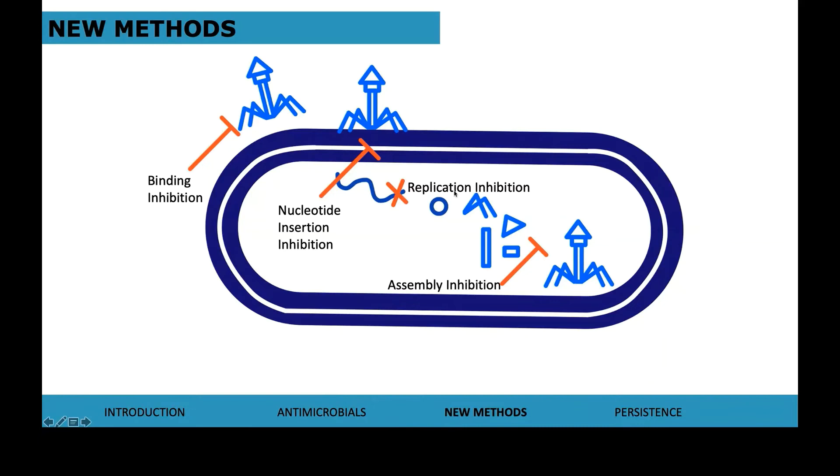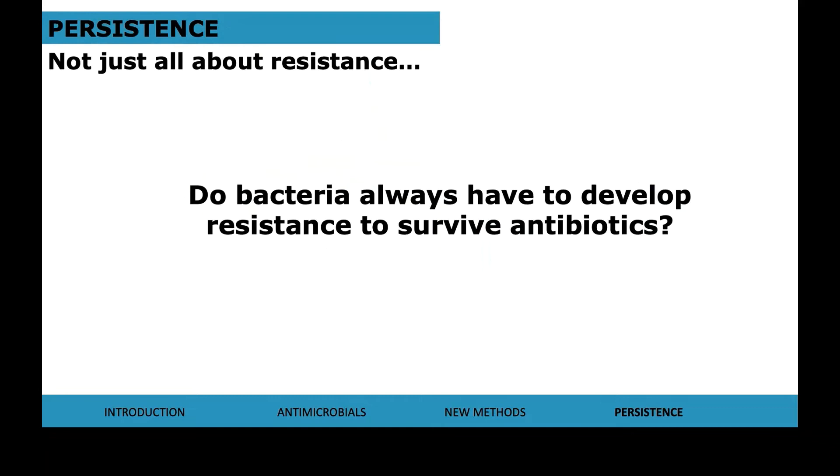But that being said, phages are incredible. And there are so many different types of phages that if you treat with a cocktail of lots of different types, it would be very difficult for the bacterial cells to be resistant against all of them simultaneously. So that is quite an exciting emerging technology that we're beginning to utilize more and more in the West. It's not all just about resistance. This has definitely dominated the field of bacterial and antimicrobial research because we see it so commonly. But do bacteria always have to develop resistance to survive antibiotics?